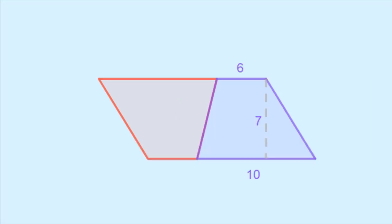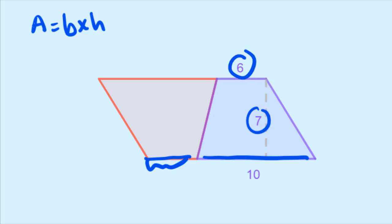So now I have a parallelogram, and I know how to find the area of a parallelogram. It's A is equal to base times height. And here, I know my height already is seven. But what's my base? It's this line here plus this line here. But I know what the distance is here because it's the top from my purple trapezoid. So that's a six.